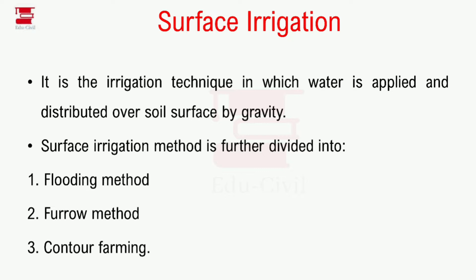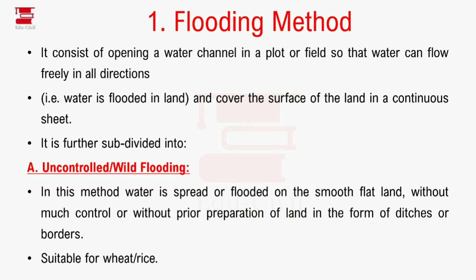The third method under surface irrigation is the flooding method, and the following method is contour farming. The flooding method consists of opening a water channel in a plot or field so that water can flow freely in all directions.